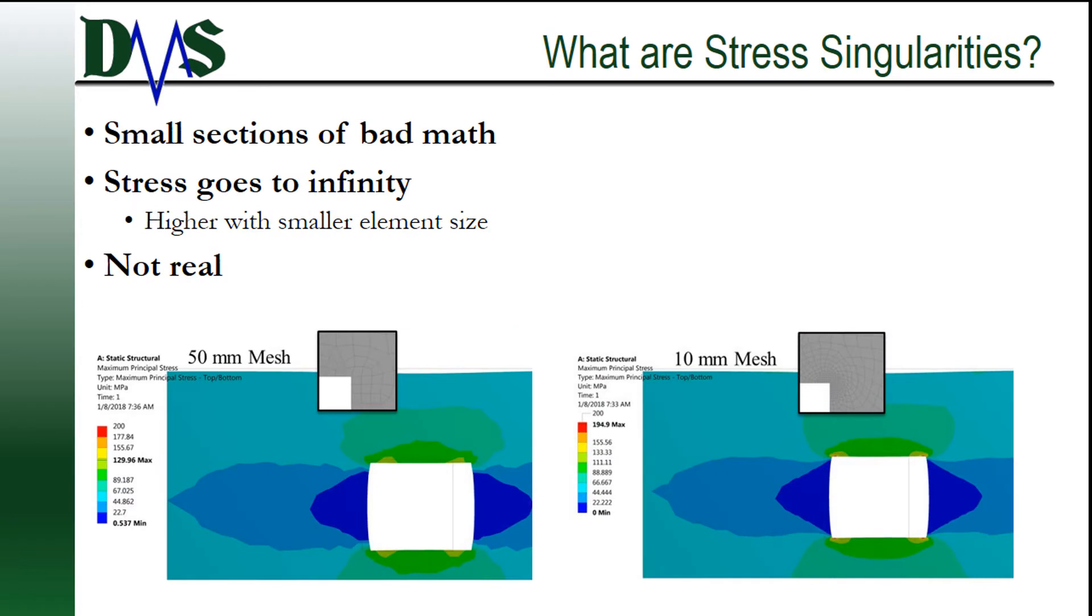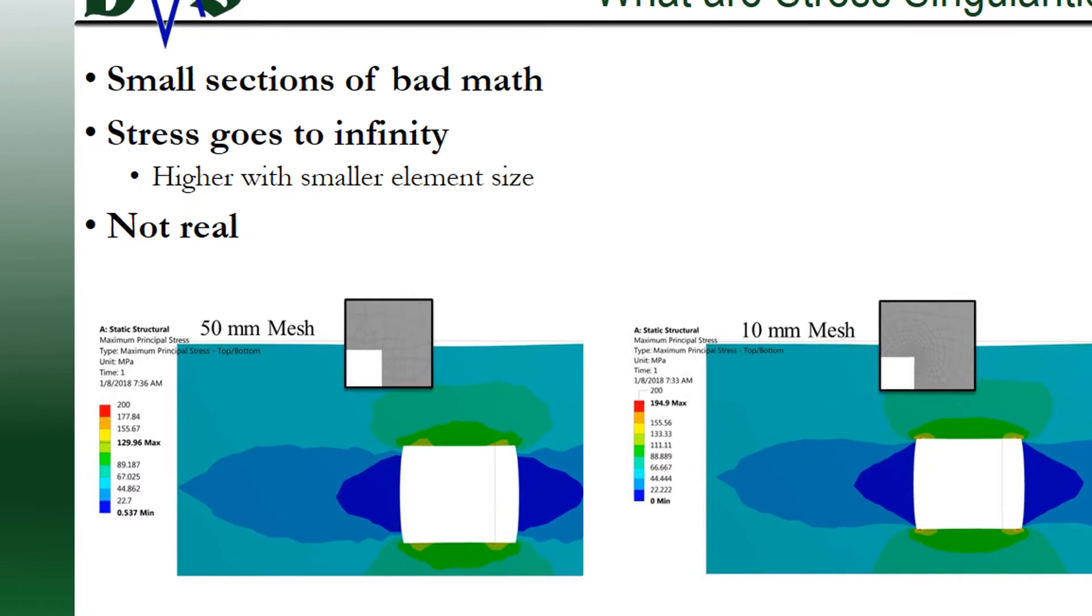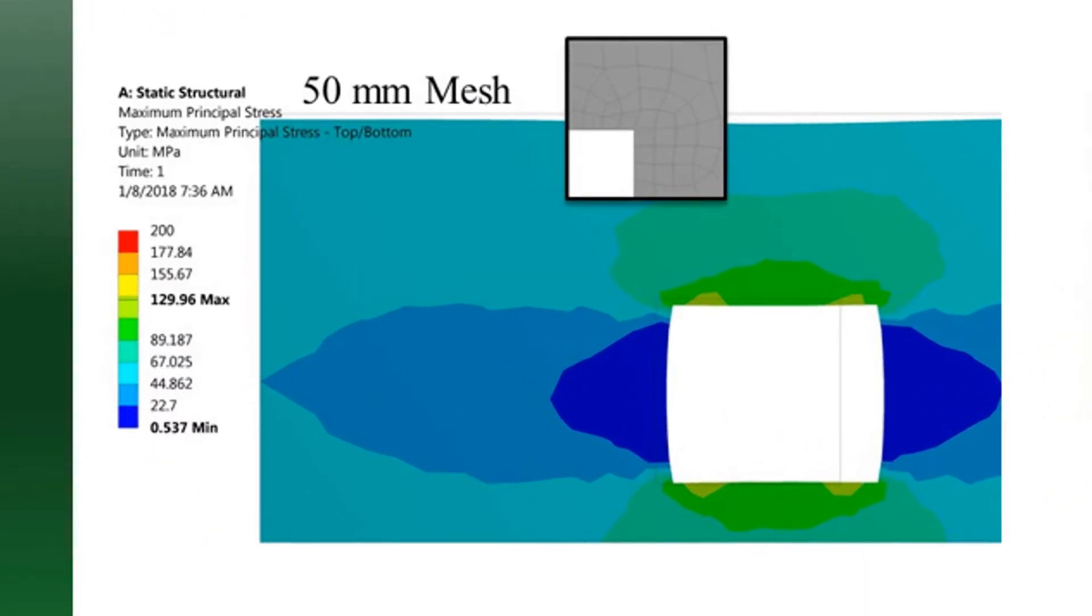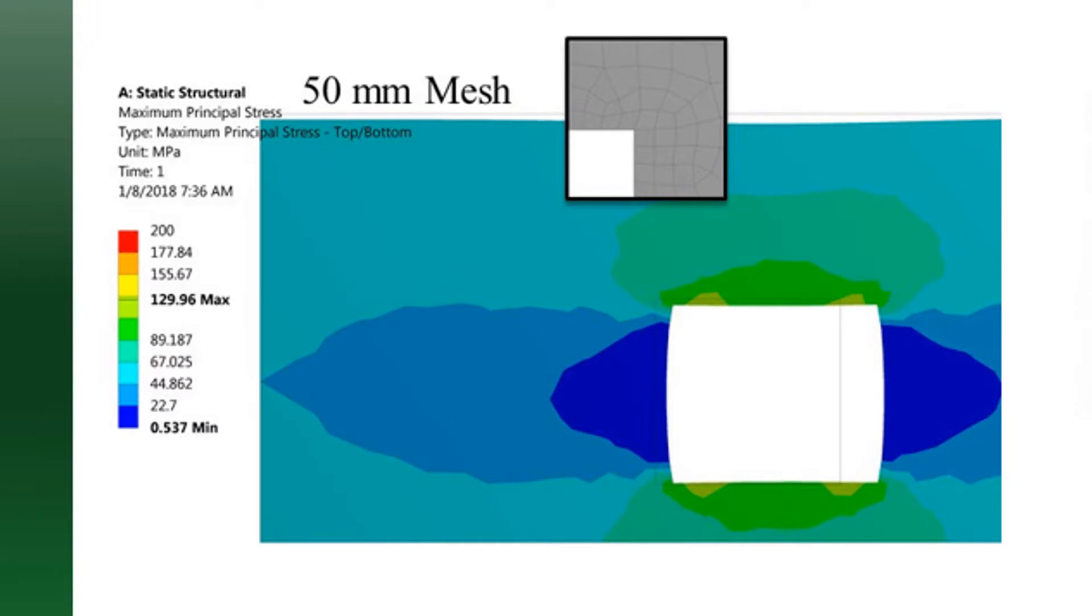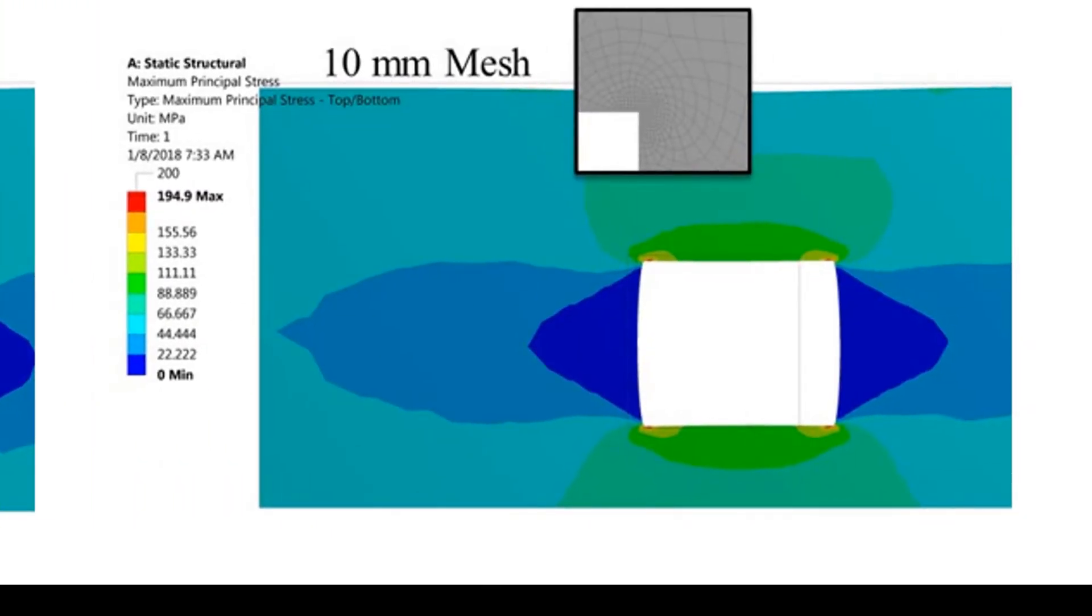So what on earth is a stress singularity? Well, there are small sections of an FEA model where the reported stresses will go higher and higher. They go far beyond any of the nearby geometry. Now I want you to examine the high stress regions in the two figures below. Notice the sharp rise in stress at the corners of a square hole, and notice that with a smaller mesh size the problem only gets worse.